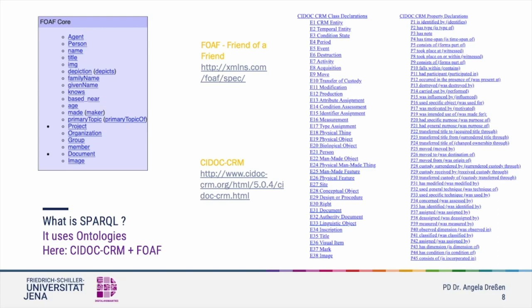CIDOC-CRM reflects the whole cosmos of categories and their possible relations. It is built with entities and properties which are designed for RDF triples. The entities can be subject or objects, but the property serves as predicate. You need to know these codes to build a triple. CIDOC-CRM is a quite complex ontology, and it is therefore easier to start with others more appropriate for beginners.